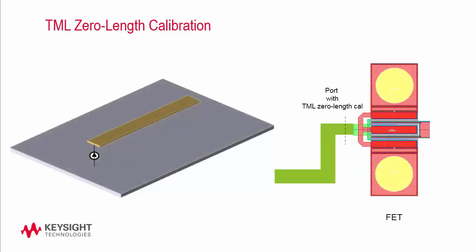This problem leads us to the second calibration type: TML zero length. TML zero length calibration is a bit different than TML — no additional calibration line is added to the structure, and the source is directly attached to the port. TML zero length calibration removes only the fringe capacitance, without adding mutual inductance from an incoming calibration line to the DUT.